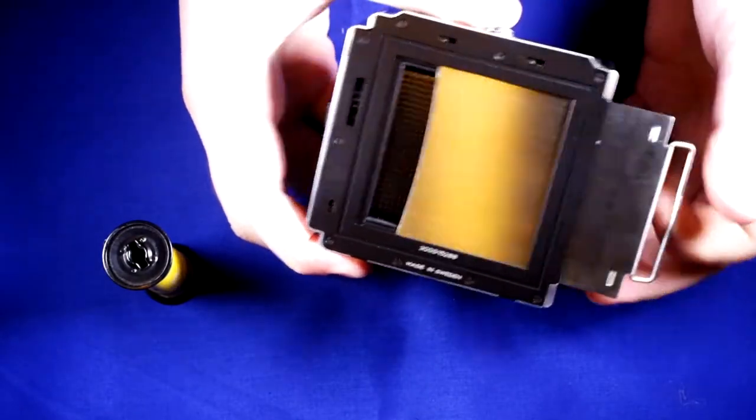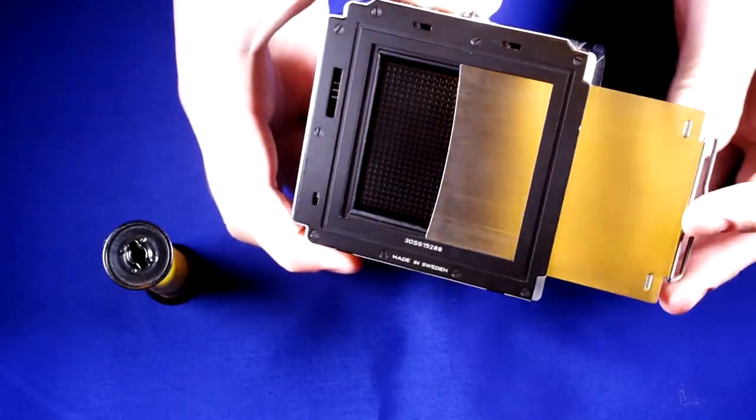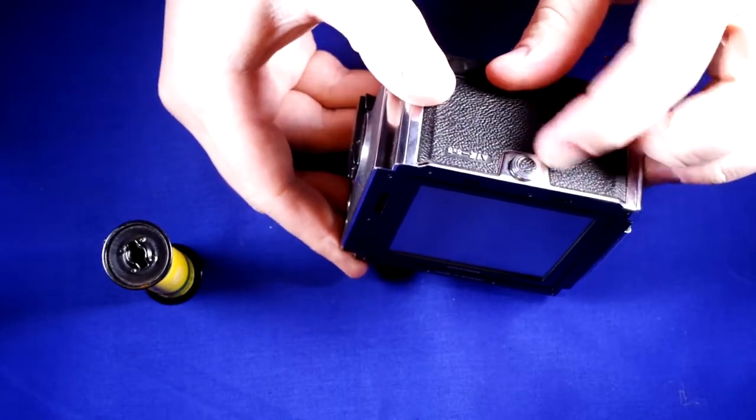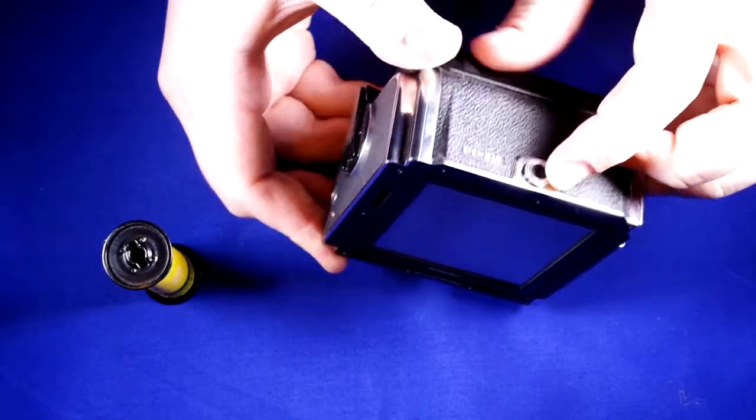This is the dark slide right here that covers the film plane so you can swap out backs. This is the release from the camera body.